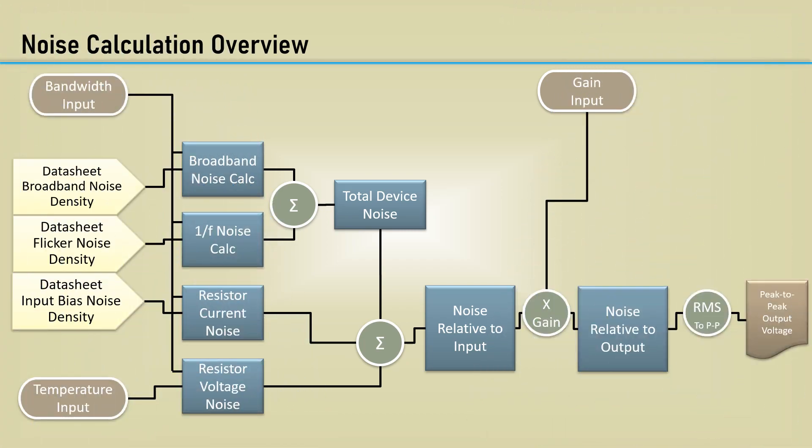Here is an overview of the op-amp noise calculation method we will be using. First, notice that the bandwidth feeds every noise calculation. Three noise density values are retrieved from the datasheet that are inputs for the broadband, 1 over F, and the resistor current noise calculations.